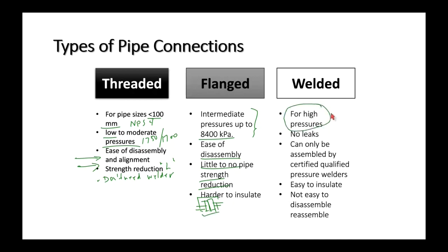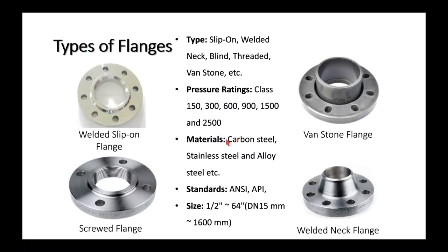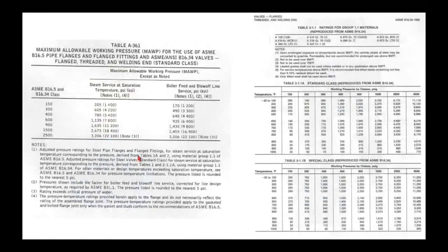The premium method of connecting pipe is welding — for very high pressures, it won't leak. However, you need certified qualified pressure welders and registered weld procedures. If you need to disassemble and reassemble, you'd use flanges. Types of flanges include: slip-on, Van Stone (loose), weld neck, and screwed-on flanges — though screwed-on flanges are not much better than threaded fittings since you still cut threads in the pipe.